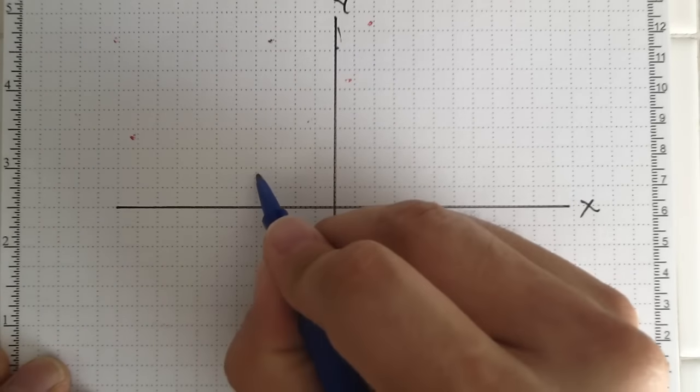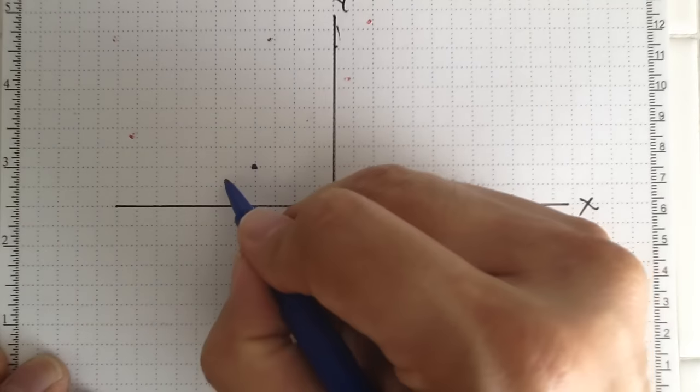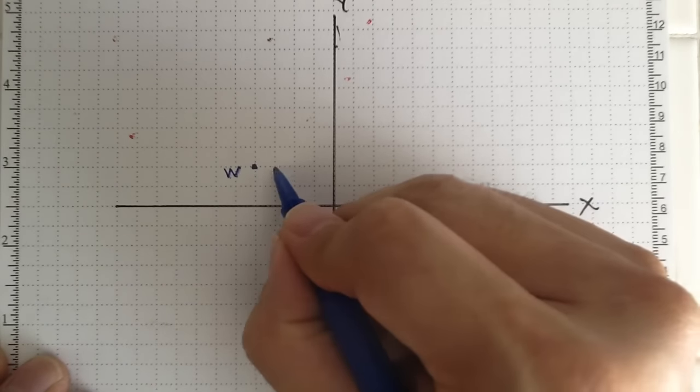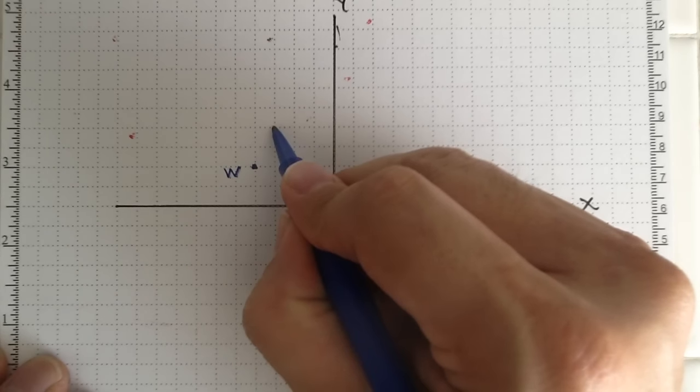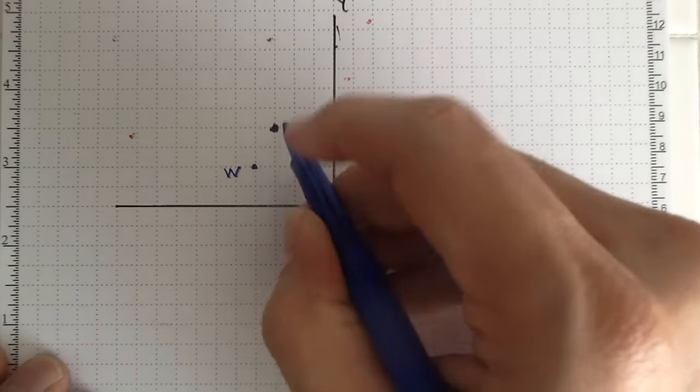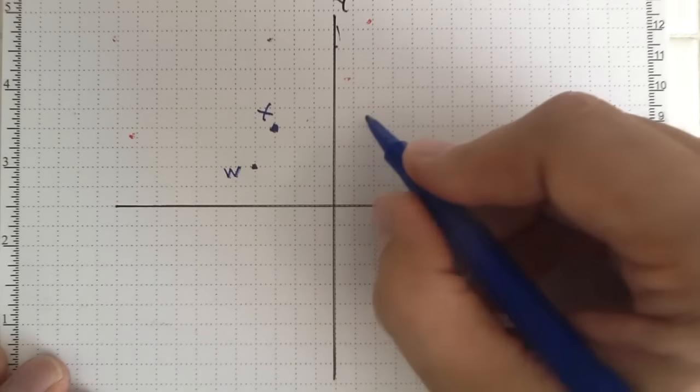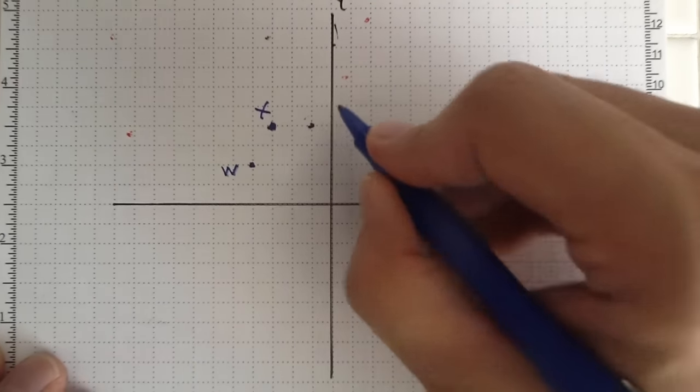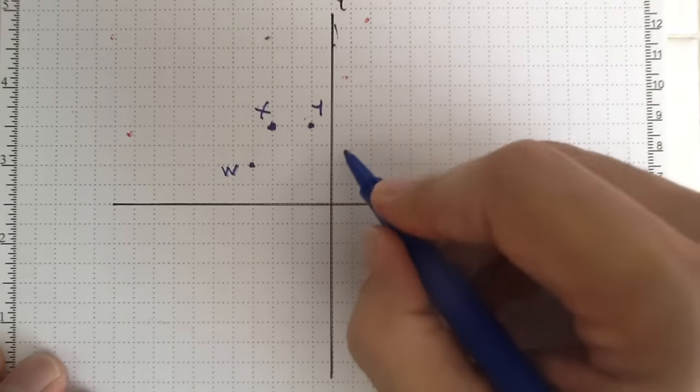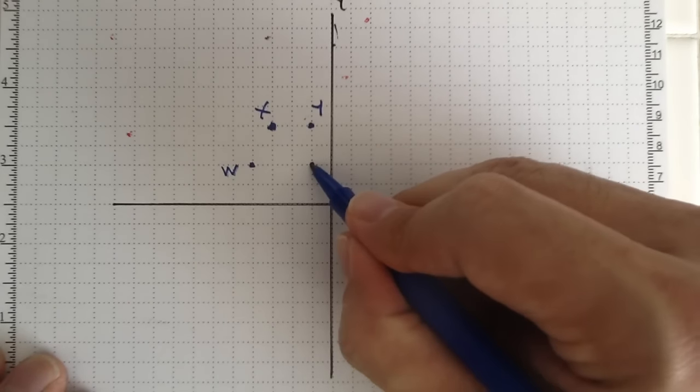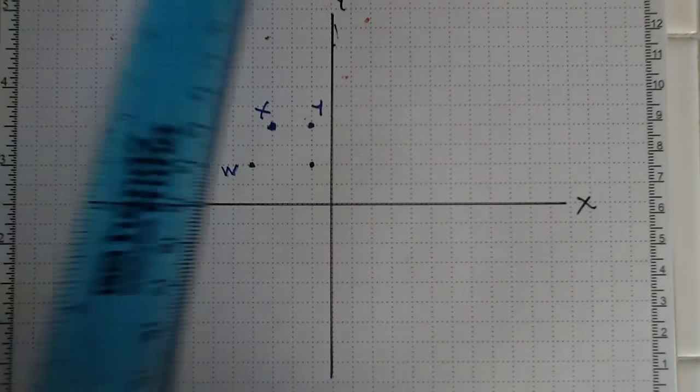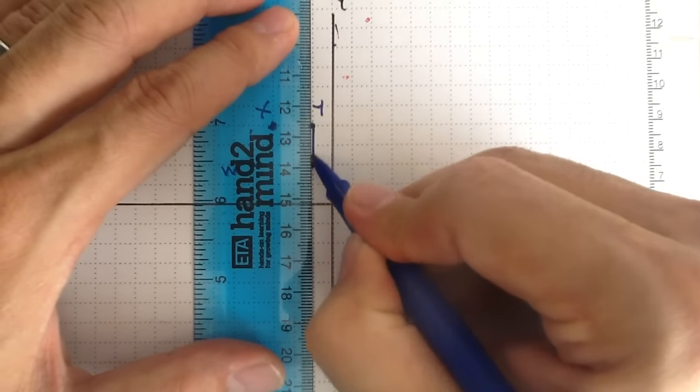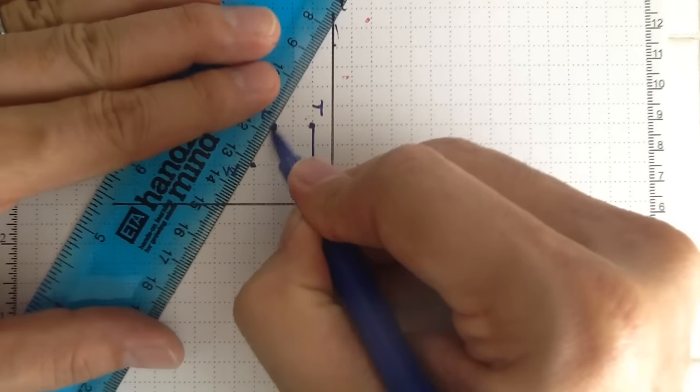Negative 4, 2 would be here. That's W. Negative 3, positive 4 is X. Y is negative 1, 4. And Z is negative 1, 2. All right. So there's our original figure, or sometimes again, referred to as the pre-image.